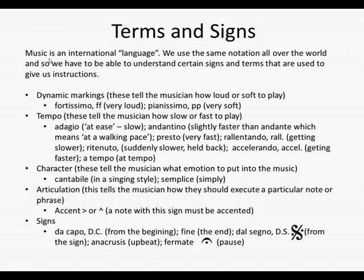Character markings tell the musician what emotion or style to put into the music. Cantabile means in a singing style, so that's when the composer really wants you to phrase beautifully. We have Simplice, which means simply — he just wants you to play simply as written.